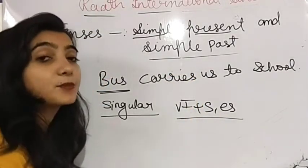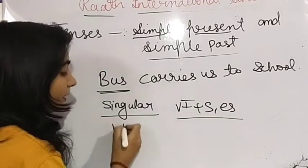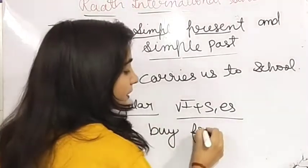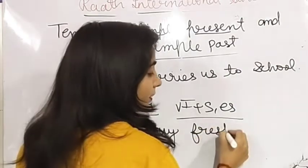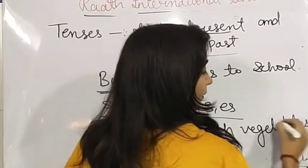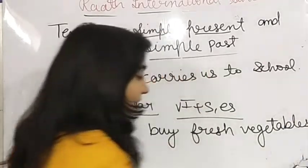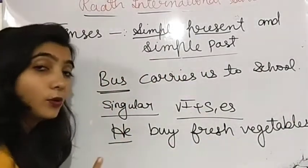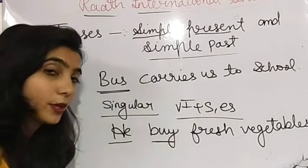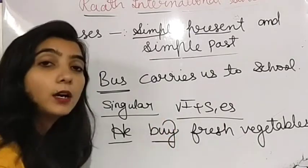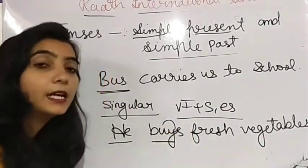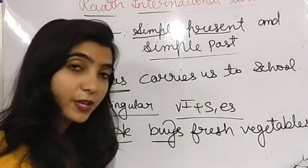'वो ताज़ी सब्ज़ियाँ खरीदता है' — He buys fresh vegetables. Here the subject is singular and the main verb 'buy' ends in Y with a vowel before it, so we just add S: buys. Now you should have understood the rule.